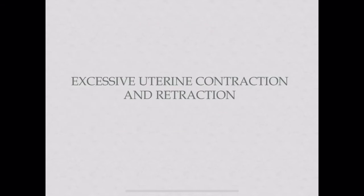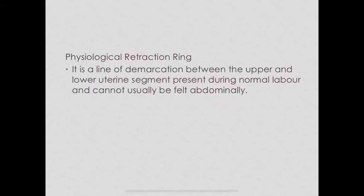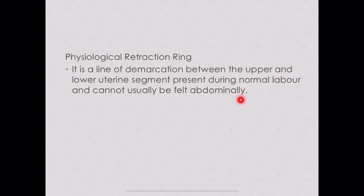Next under over-efficient uterine action is excessive uterine contraction and retraction. Under this comes physiological retraction ring, which is a line of demarcation between the upper and lower uterine segment present during normal labor. It cannot usually be felt abdominally. This is the main difference between the physiological retraction ring and the pathological contraction ring, which we will discuss next.